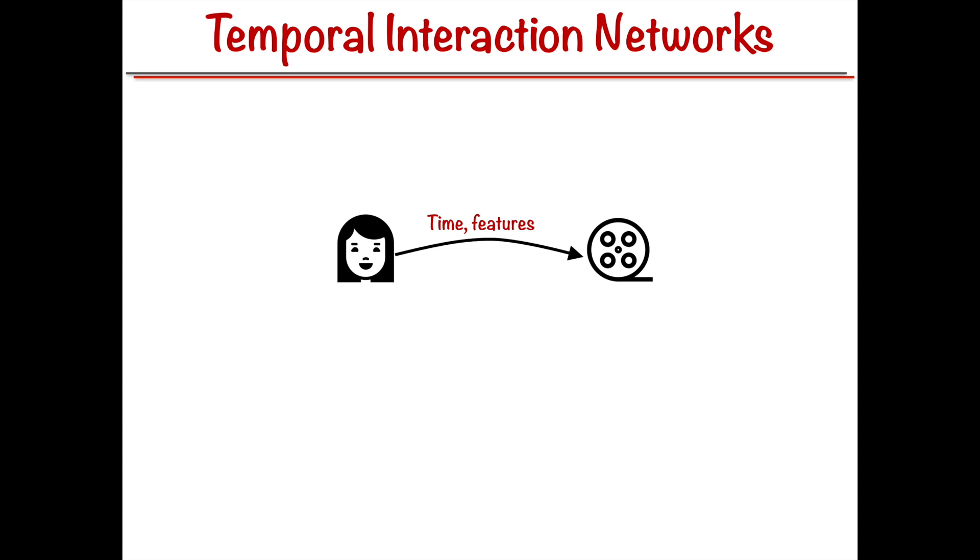Take yourself for example. When you purchase an item on an e-commerce platform, you create a directed edge indicating an interaction from yourself to the item. Each interaction is associated with the timestamp and a feature vector, for example, the amount you paid for the item.